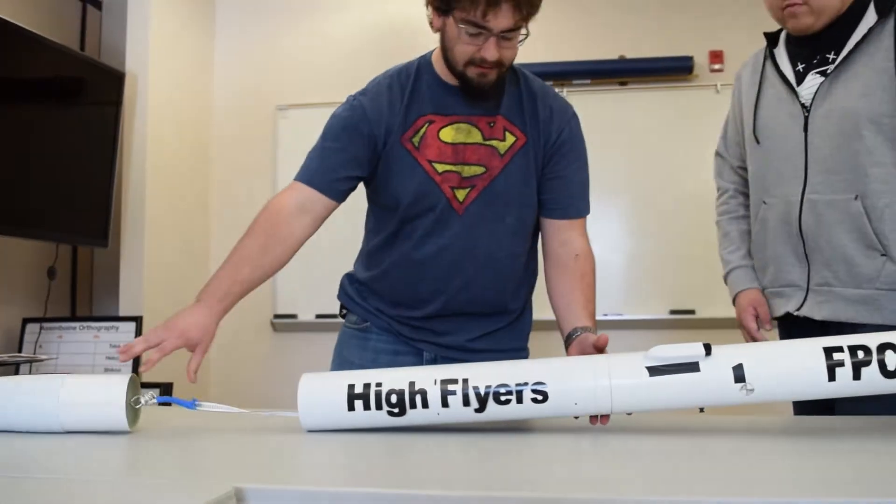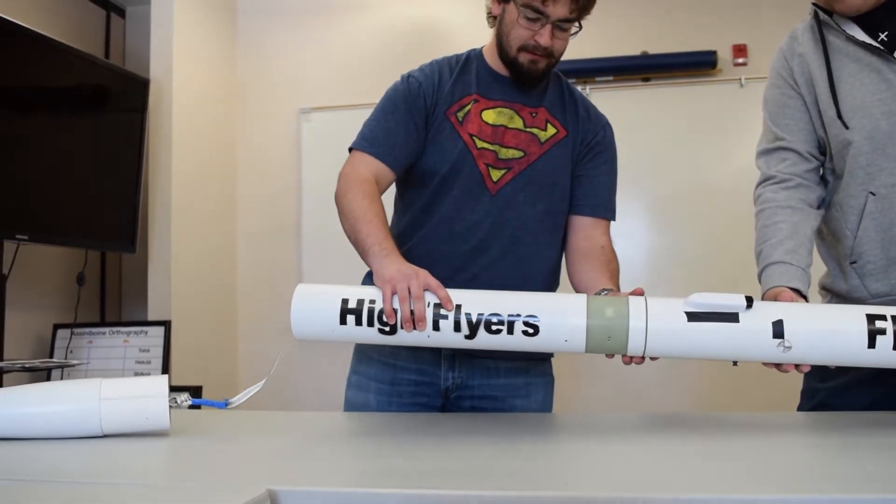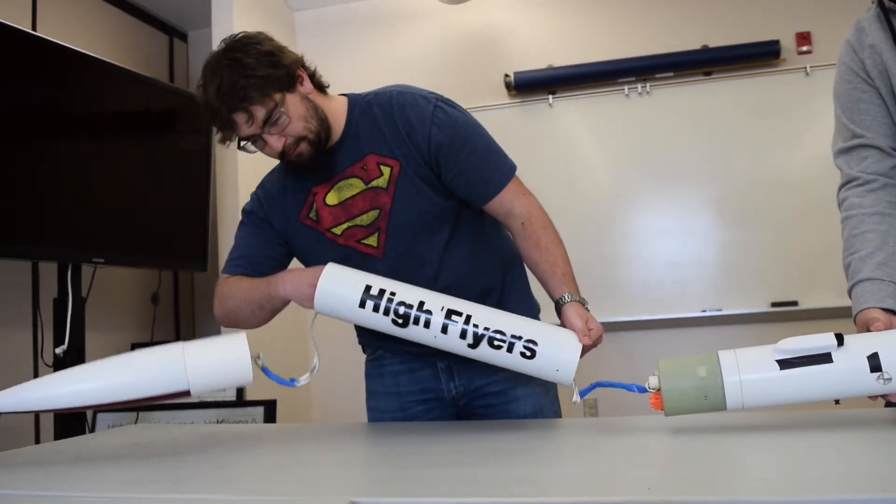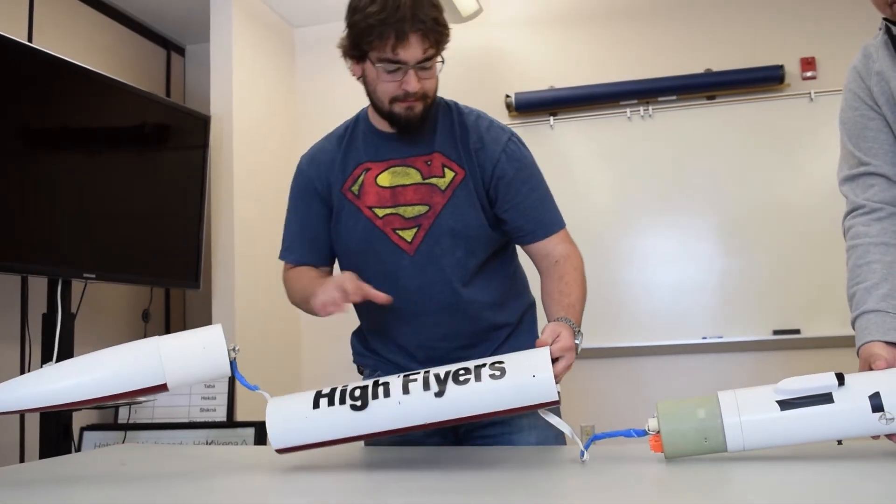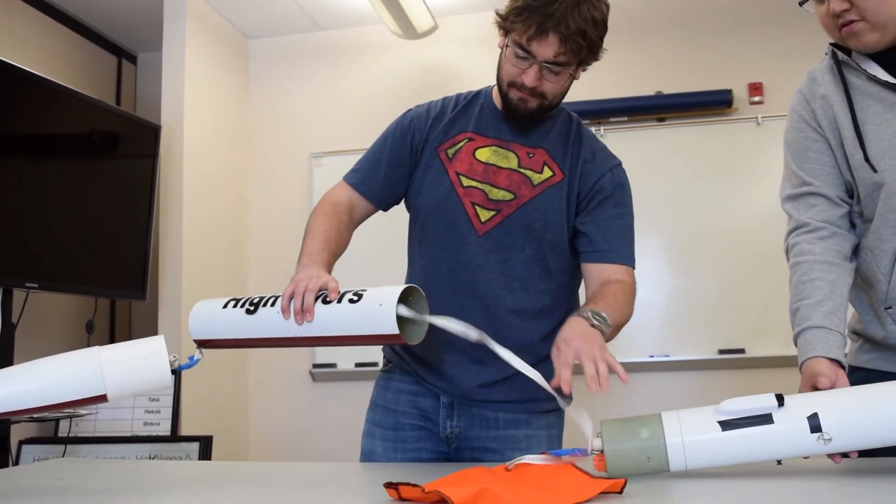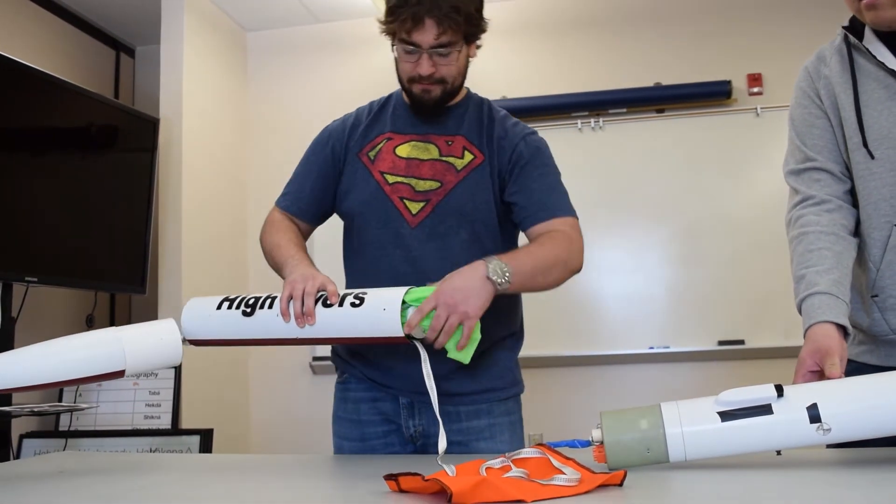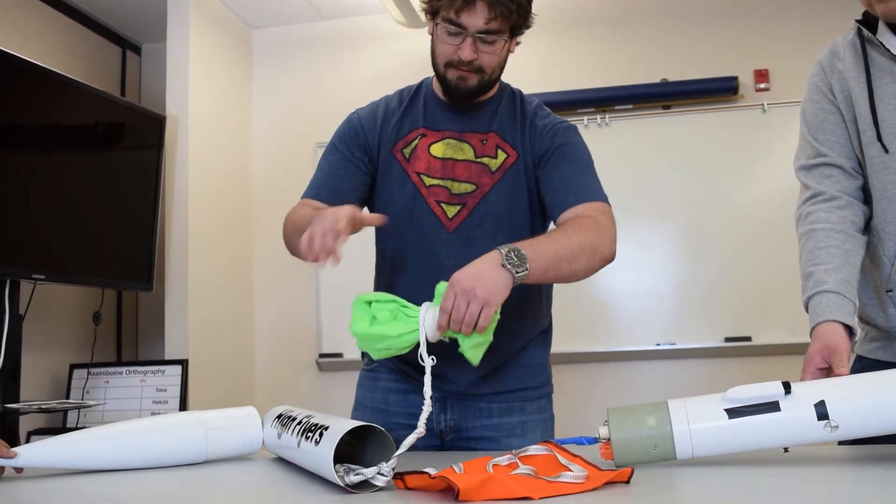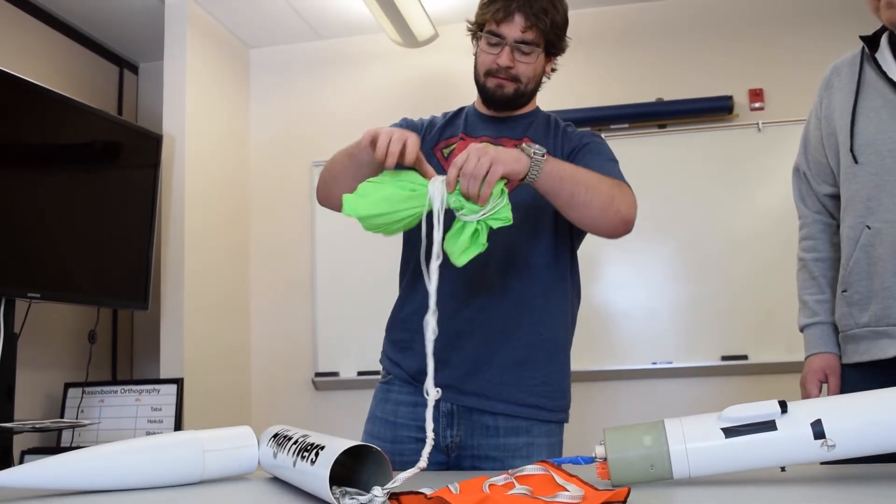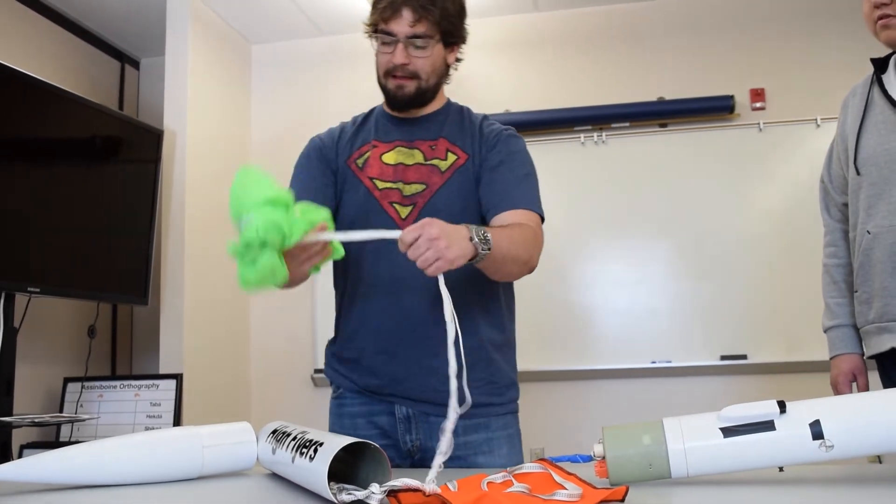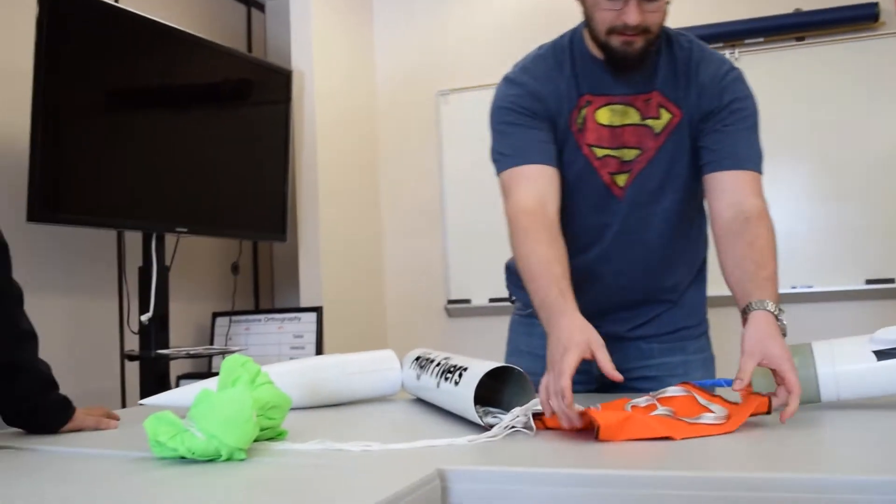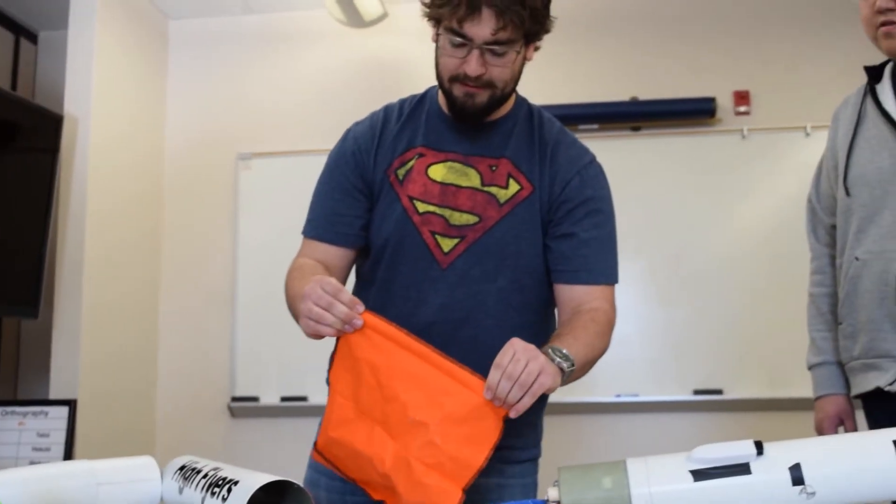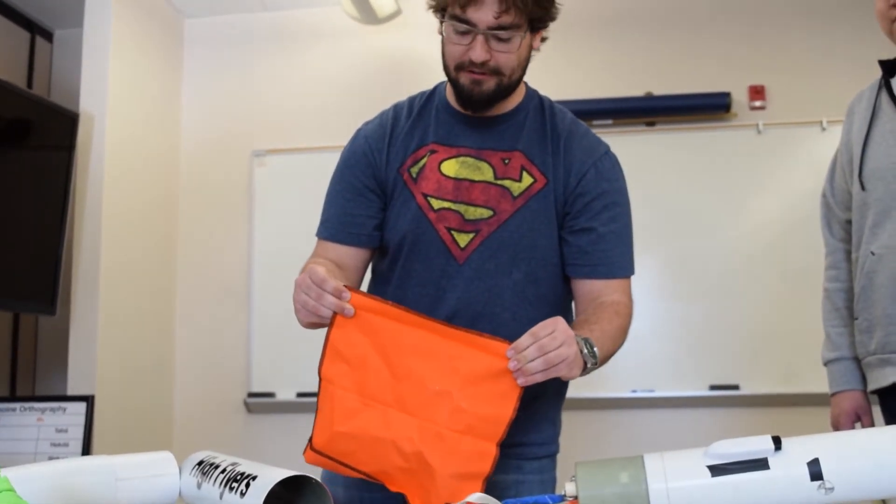Now if we pull the next airframe apart, this part here contains the main parachute. Now this is a 48 inch parachute, nothing fancy really. And that will come out. And of course we got protective wadding to keep it from starting on fire when the ejection charges launch.